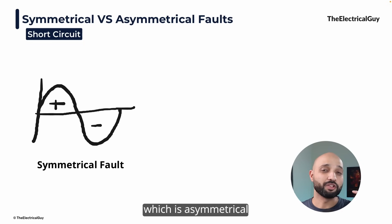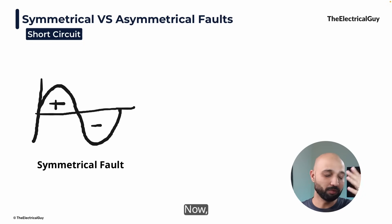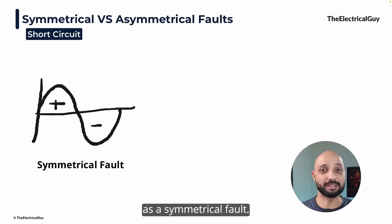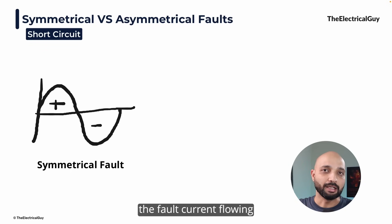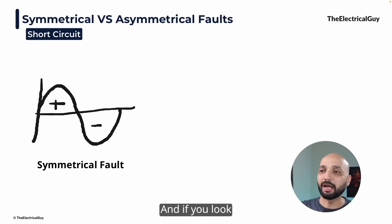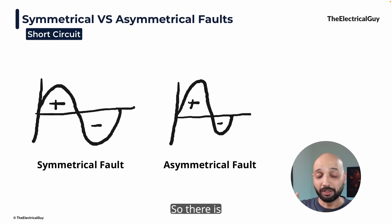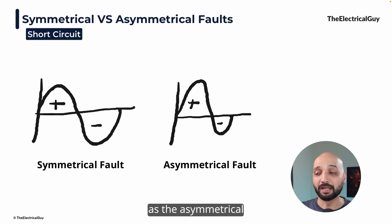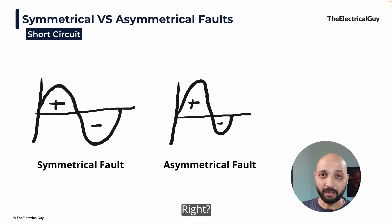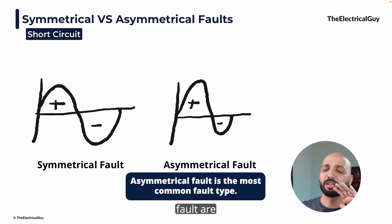The second type of fault is asymmetrical in nature. In this type of fault, the fault current flowing into the system is not displaced at 120 degrees. If you look at the waveform, maybe the positive half cycle is larger and the negative half cycle is smaller, or vice versa — so there is asymmetry in the system. That's why they are called asymmetrical faults. And asymmetrical faults are the most common types of fault the power system sees.